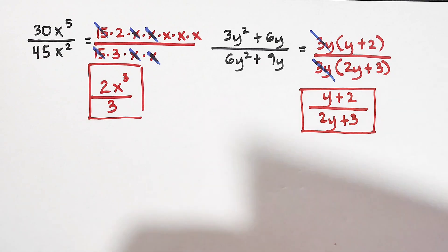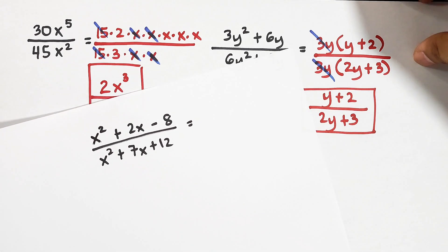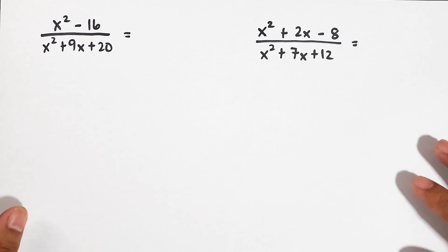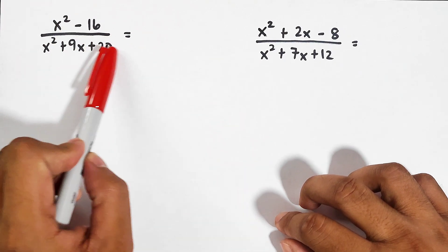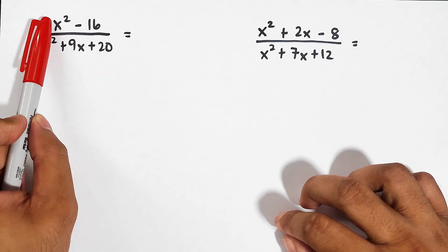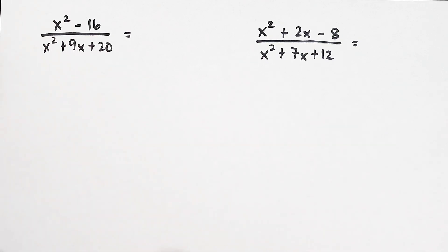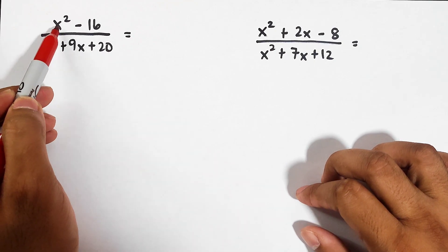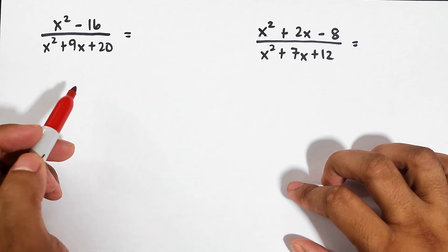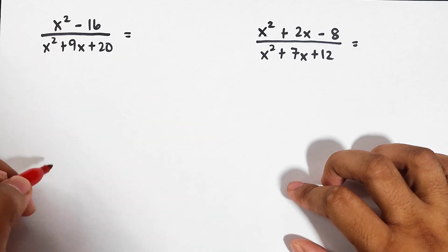Let's move on to the next expression: x squared minus 16 over x squared plus 9x plus 20. The numerator is a binomial and the denominator is a trinomial. For x squared minus 16, we can use the difference of two squares method. The pattern for the difference of two squares is x squared minus y squared.